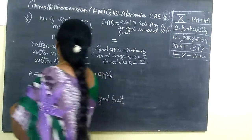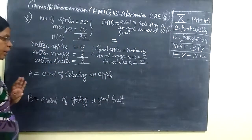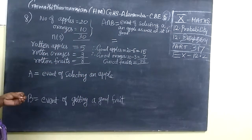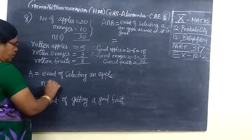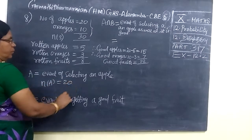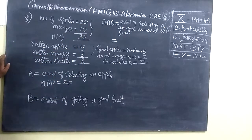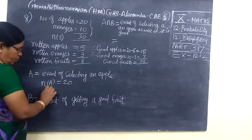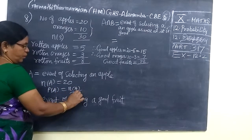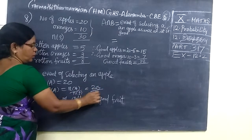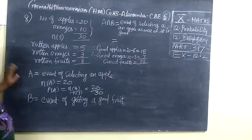Now we want to find event of selecting an apple. Either it is good or bad, we want to select an apple. So that means N of A equal to 20. This 20 includes good apples as well as rotten apples. But that doesn't matter, we want to select just an apple. Therefore, P of A equal to N of A by N of S equal to 20 by 30.